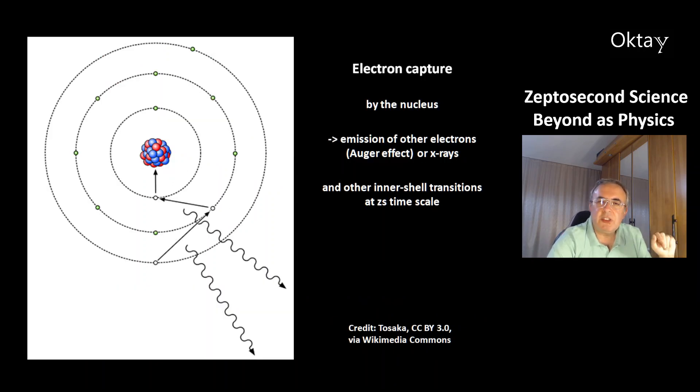This is one such phenomenon, that's the electron capture by the nucleus. Here the inner electron is captured. In this event, other electrons can be emitted. This is called Auger effect. Or x-rays can be emitted. And there are other inner shell transitions that also happen at the zeptosecond timescale. That's why this science is interesting.